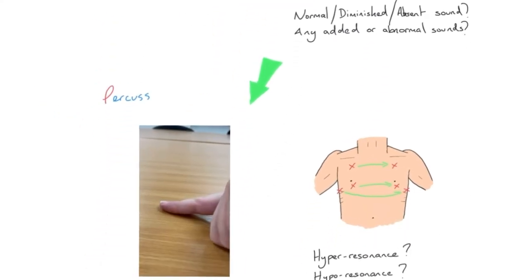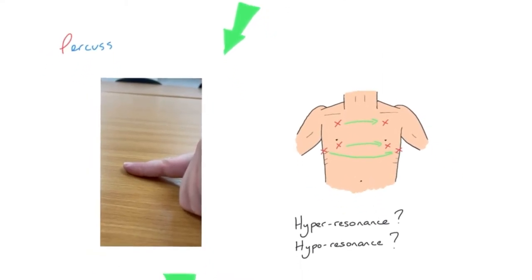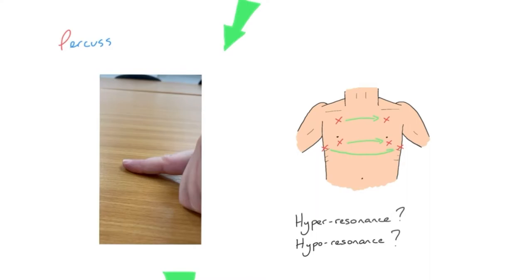After auscultation, we percuss the patient's chest — again comparing one side to the other. We're listening for hyper-resonance, indicating air in the chest, or hypo-resonance, suggesting fluid on that side. The only way to know what is hyper or hypo-resonant is by performing this on many normal chests so you become familiar with a normal percussion note. If you're comparing one side to the other, you'll hopefully hear a tone difference if something is wrong.